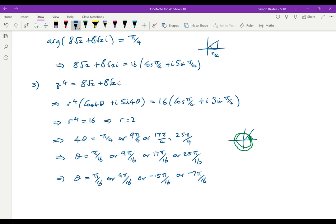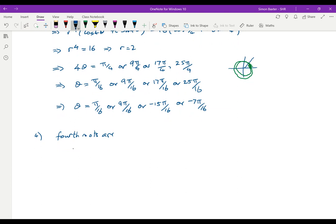Now we have that the fourth roots are: z₁, let's say, is r which is 2, e^(iπ/16), which is 2(cos π/16 + i sin π/16).